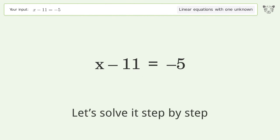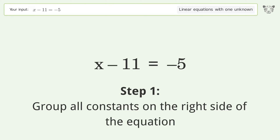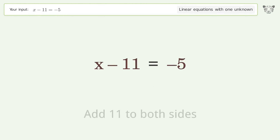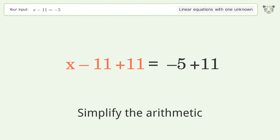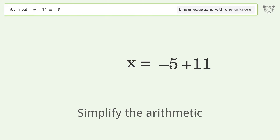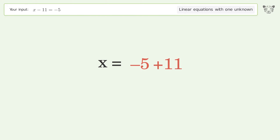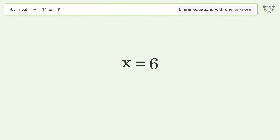Let's solve it step by step. Group all constants on the right side of the equation — add 11 to both sides, then simplify the arithmetic. And so the final result is x equals 6.